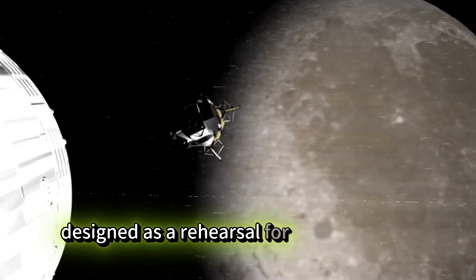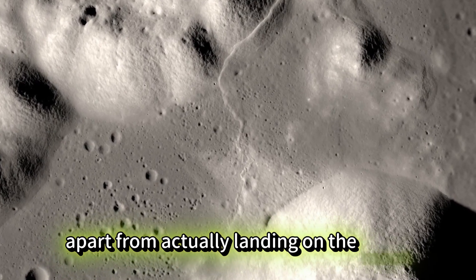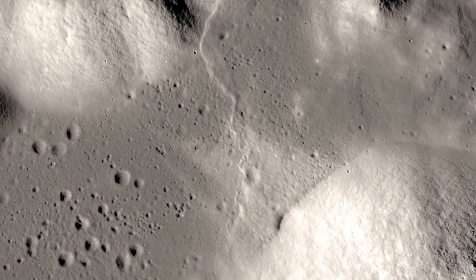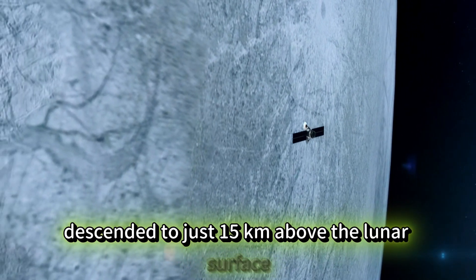Designed as a rehearsal for the upcoming Apollo 11 mission, Apollo 10 did everything apart from actually landing on the moon. Once in lunar orbit, astronauts Thomas Stafford and Eugene Cernan descended to just 15 kilometers above the lunar surface.